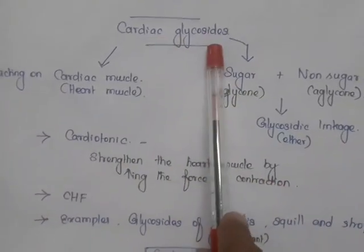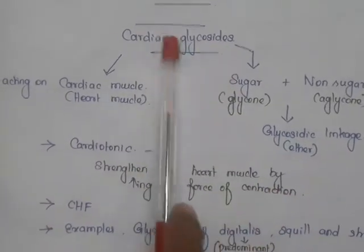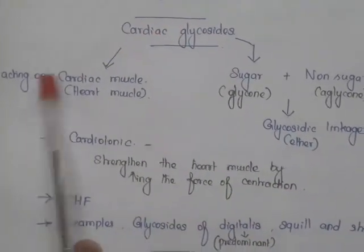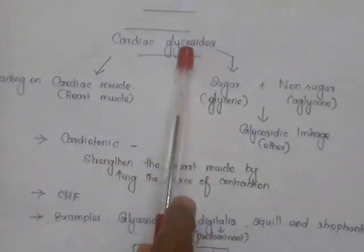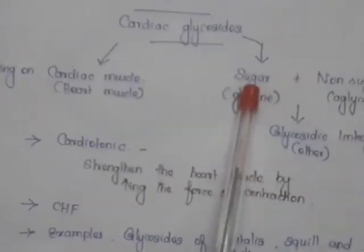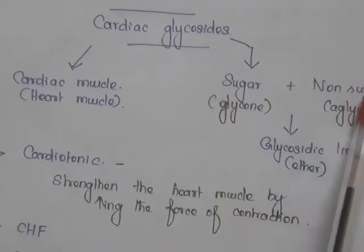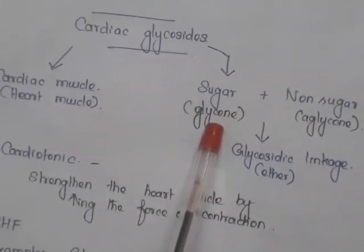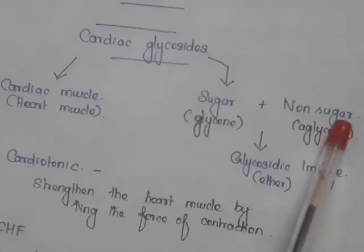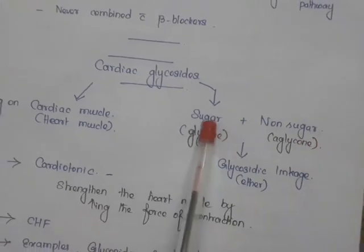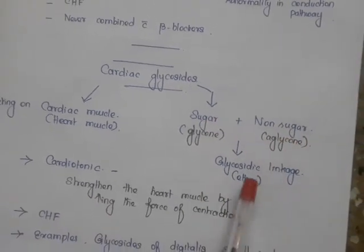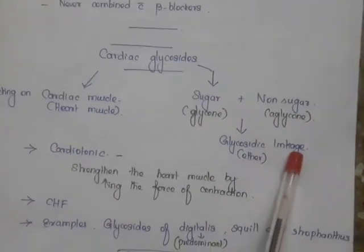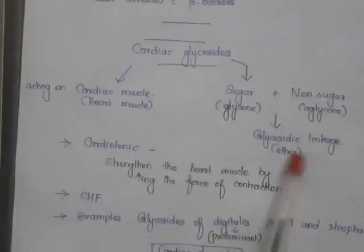Today we will see about cardiac glycosides. Cardiac glycosides are mainly acting on cardiac muscle, that is the heart muscle. Glycosides have two parts: one is the sugar portion and the other is the non-sugar portion. The sugar portion is called glycone and the non-sugar portion is called aglycone. These two are connected by means of glycosidic linkage or ether linkage.